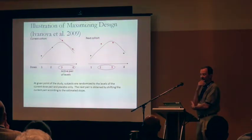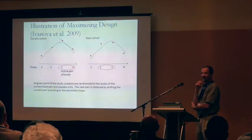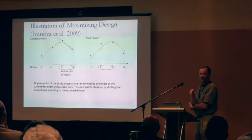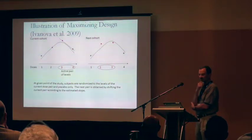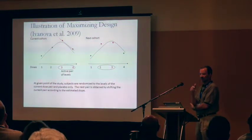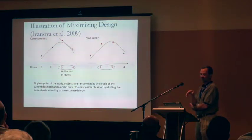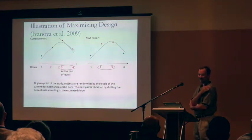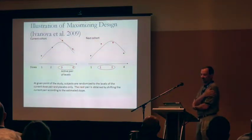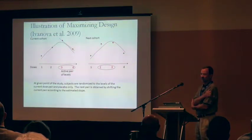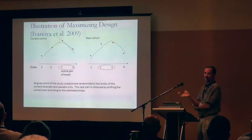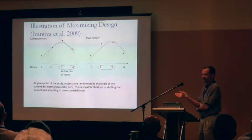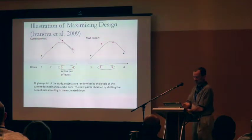The design proceeds in cohorts of subjects, and each cohort is randomized to one or two doses plus the controls. If you start with doses three and four and you get an observation of a negative slope, then that means the maximum is to the left, so the next cohort gets randomized to the two lower doses. If the slope is positive, then you increase the dose by one increment for the next two cohorts.